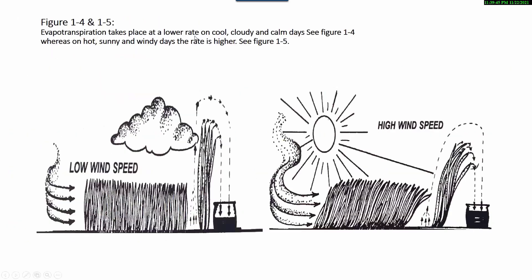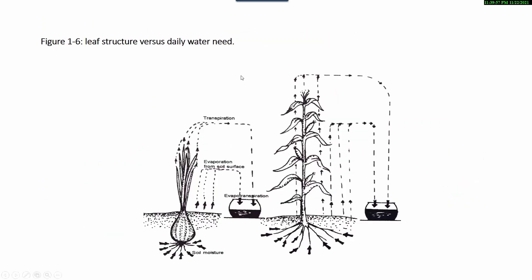Evapotranspiration takes place at a lower rate on cold, cloudy, and calm days, whereas on hot, sunny, and windy days the rate is higher. Leaf structure versus daily water need.